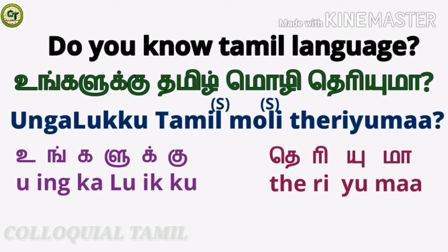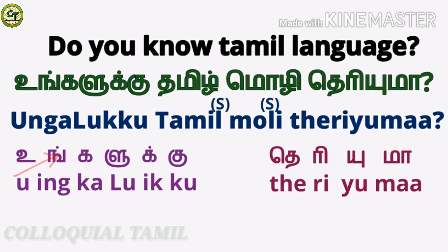Let's look at the sentence: how to ask 'Do you know Tamil language?' in Tamil. You already know 'Tamil' and 'moLi.' For 'theriyumaa', the last letter — 'ம்', a consonant in 'theriyum' — changes to 'மா', a long sound letter; you say it in a question tone: 'theriyumaa.' Then for the word 'unngalukku': this is 'உ', a short vowel; this is 'ங்', a consonant; this is 'க', a short sound letter; this is 'கு', a short sound letter.